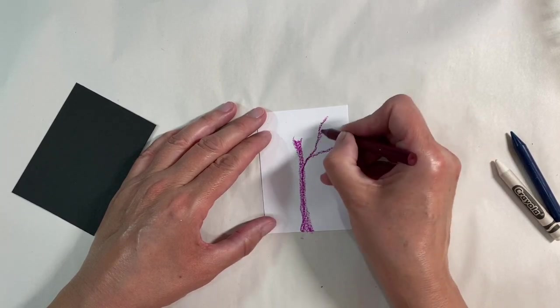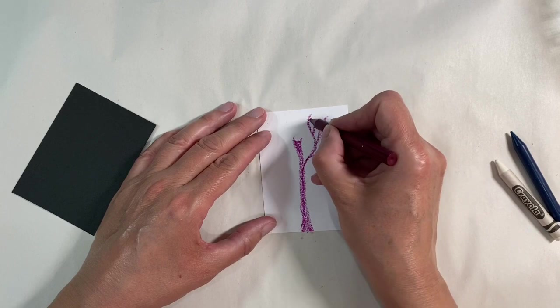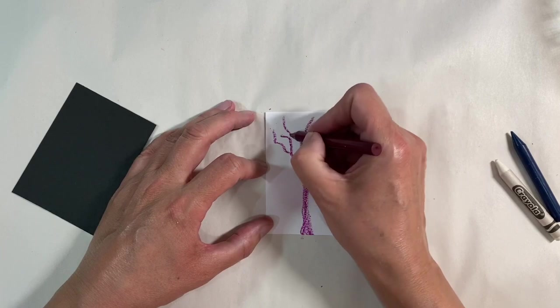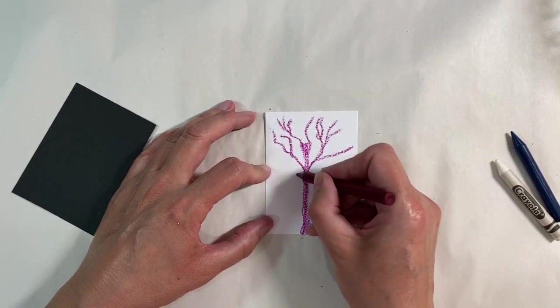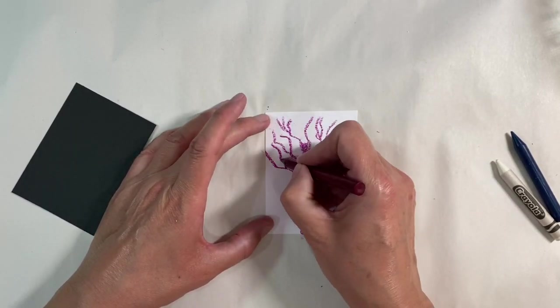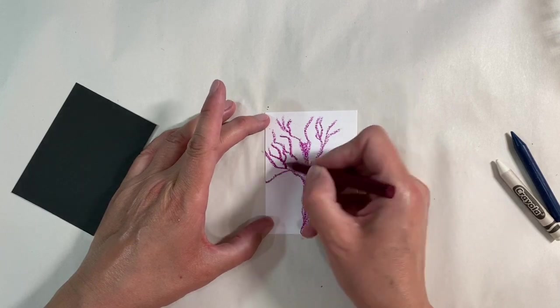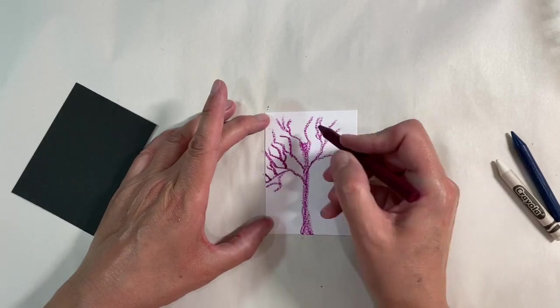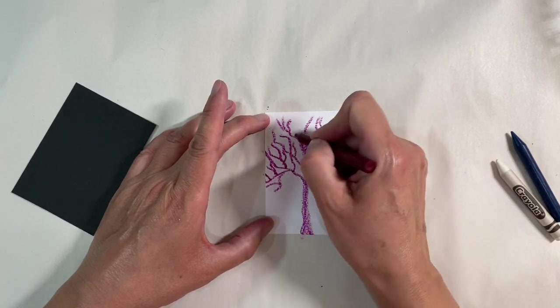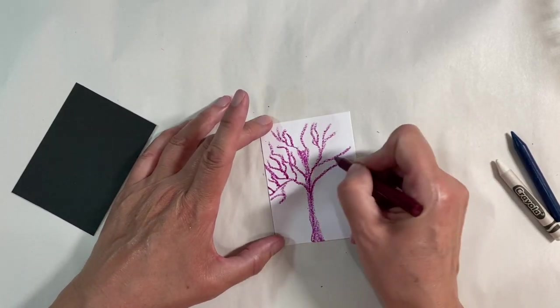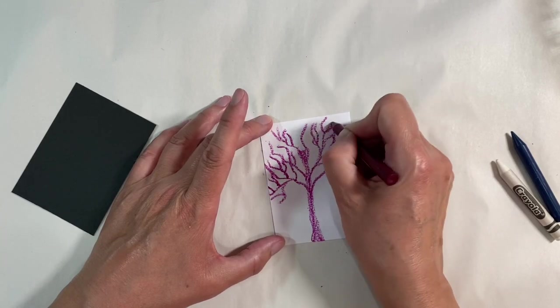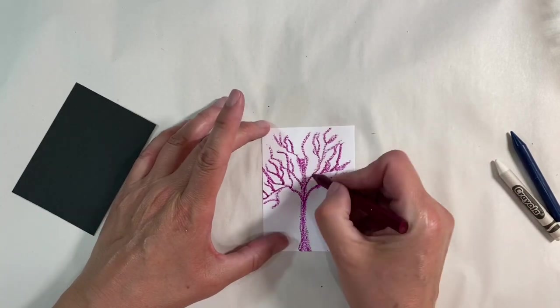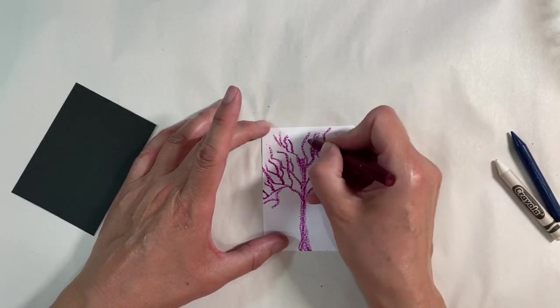The crayon will act as a resist to any paints I decide to add later. So I'm just going to draw myself some branches, and you can see just being really wavy about this. Try not to overthink it if you decide to do this kind of thing. The more random you are, the better the look, I think anyway.